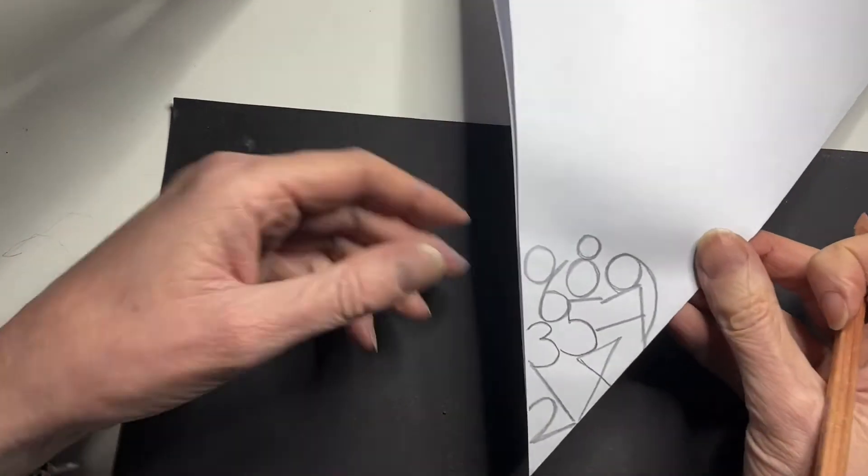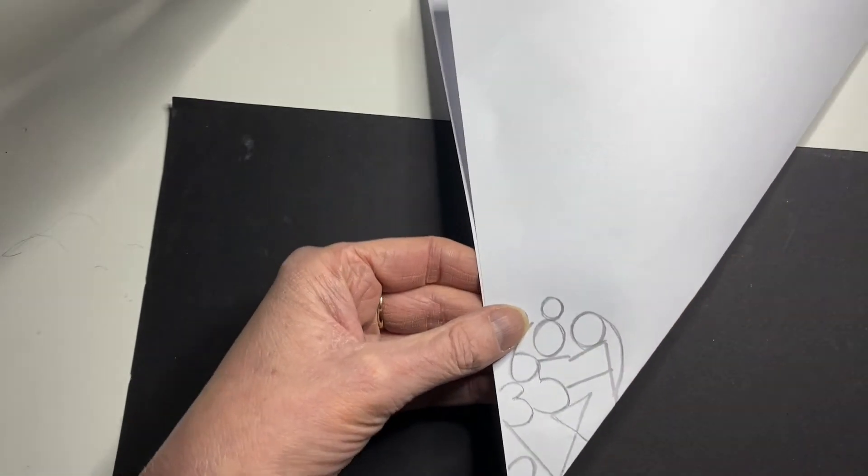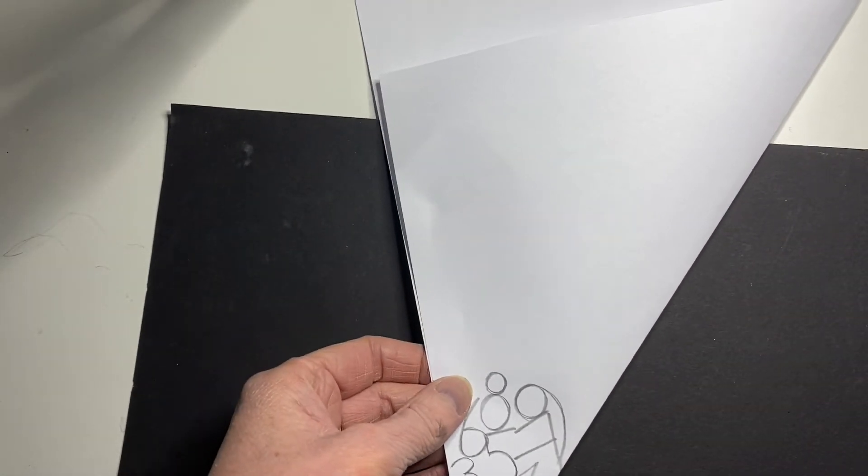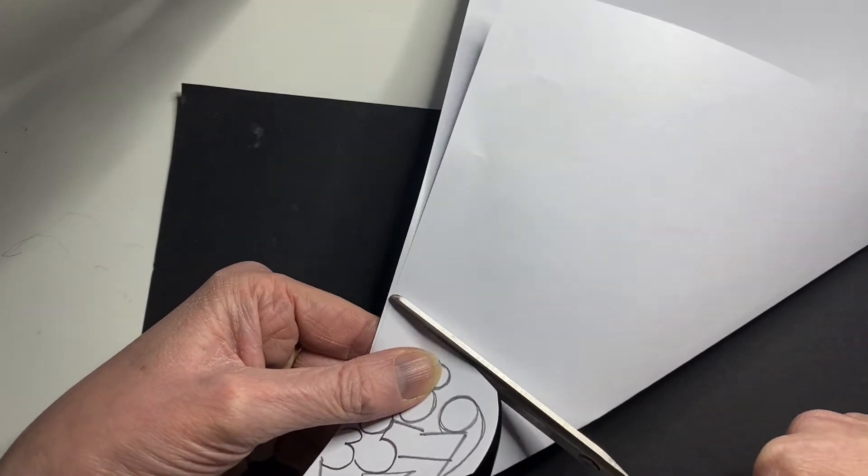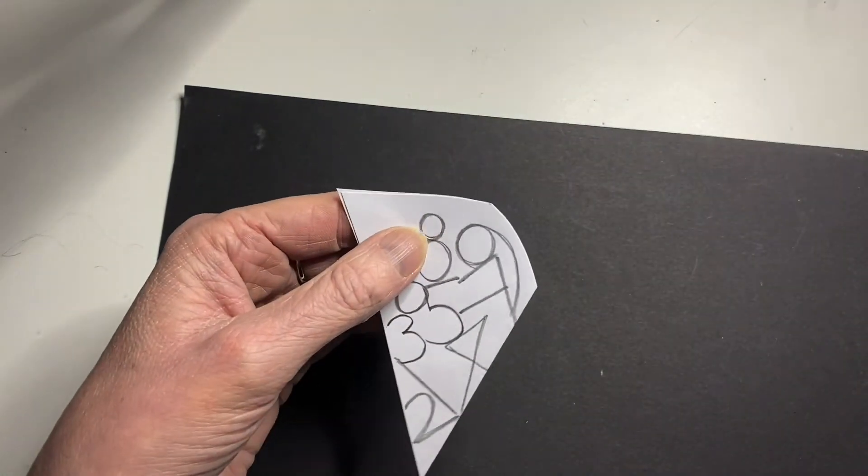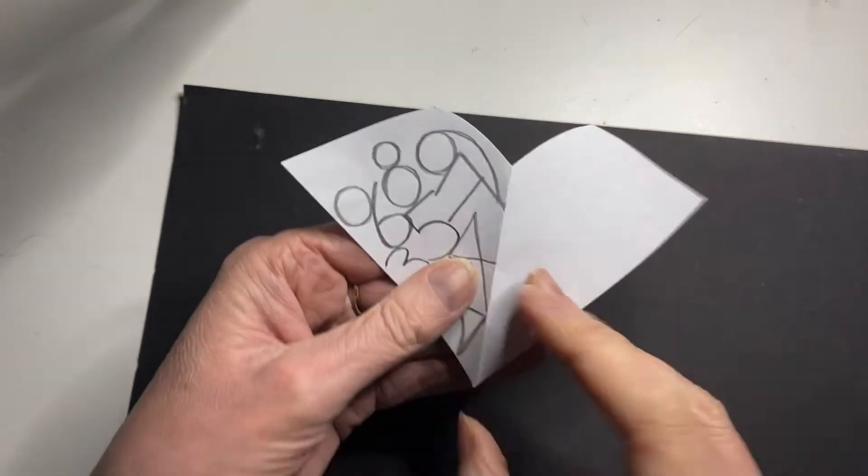So I've now drawn the numbers on one side and I'm going to cut off the excess paper at this stage. I don't need any more. You could just cut it small. You don't have to cut it like I have at a profile.